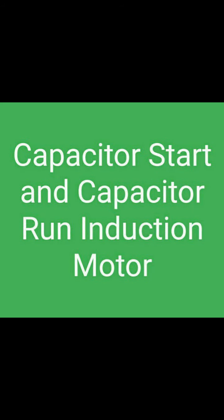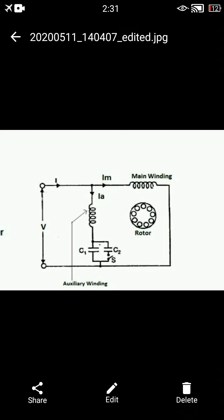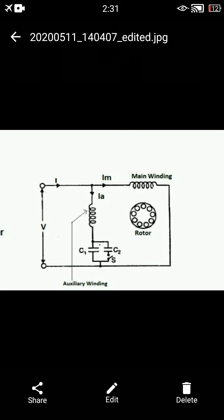Today we are discussing the capacitor start and capacitor run induction motor. As shown in the figure, V is the single-phase supply voltage and I is the current flowing through the motor. According to its construction, the single-phase induction motor stator has two windings: the main winding and the auxiliary winding. In the capacitor start capacitor run motor, the auxiliary winding uses two capacitors, C1 and C2, and both capacitors are in working condition.